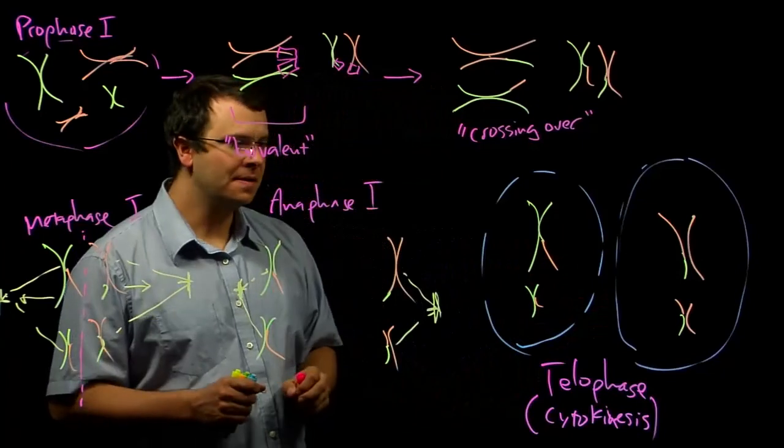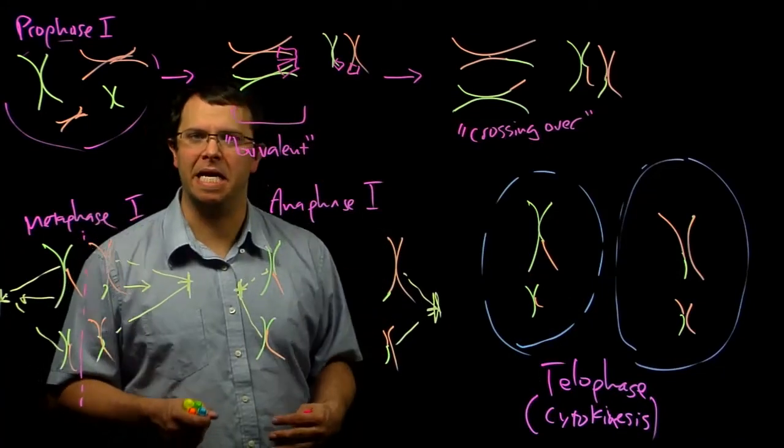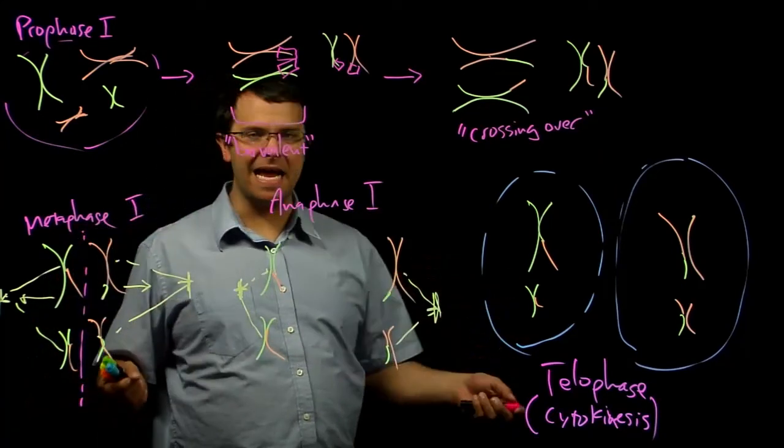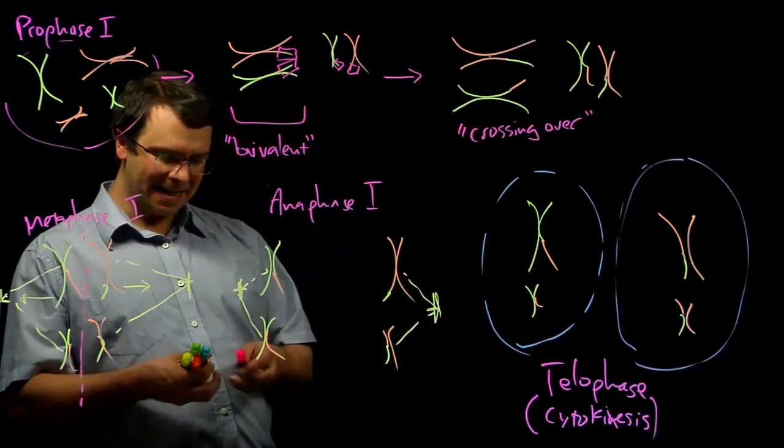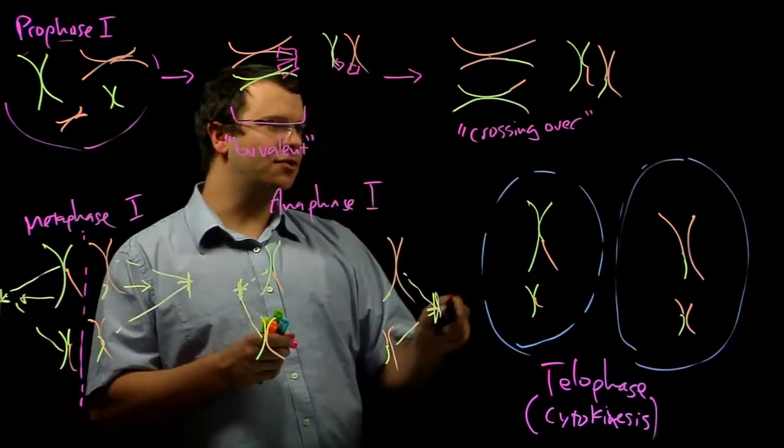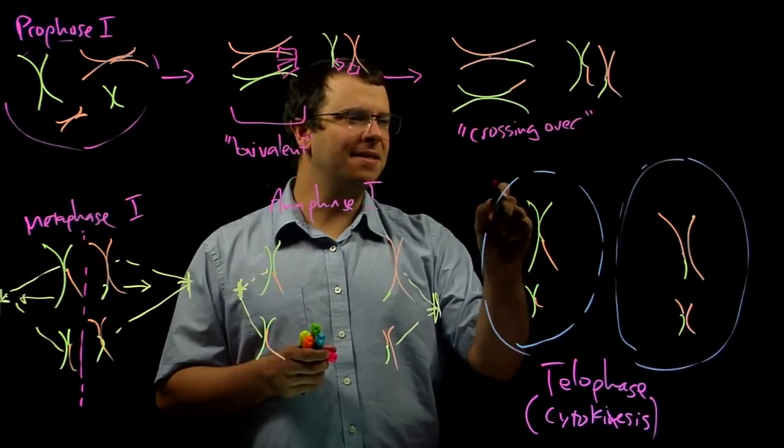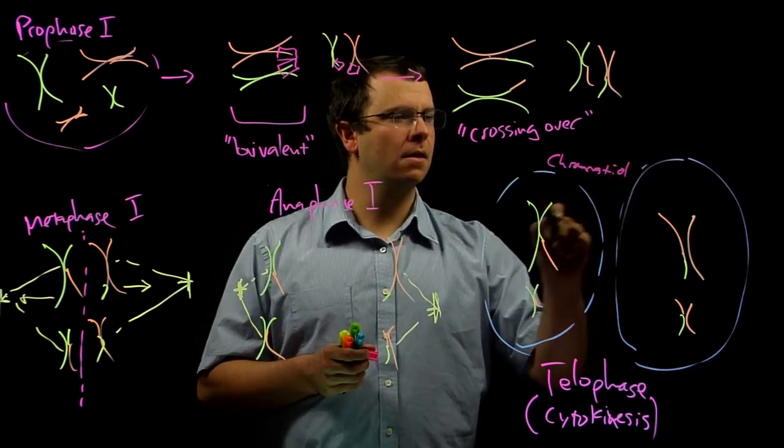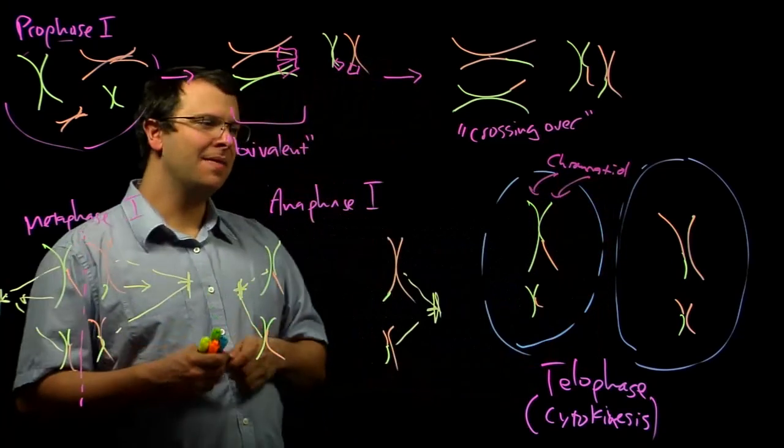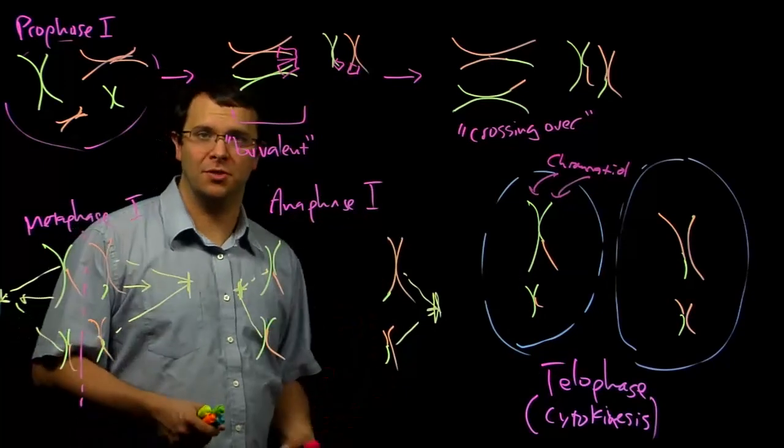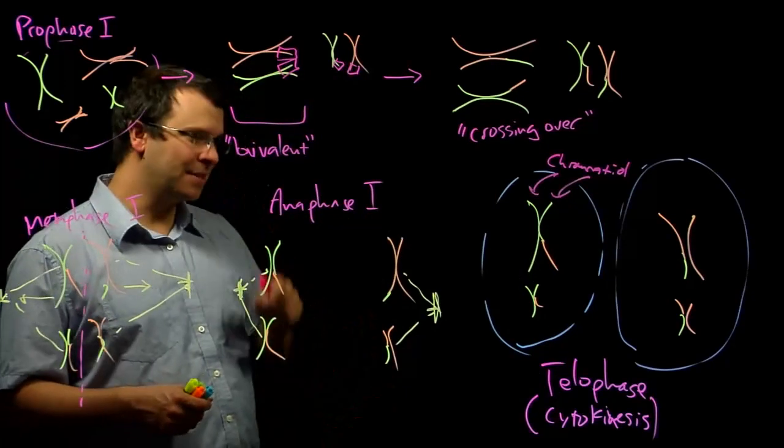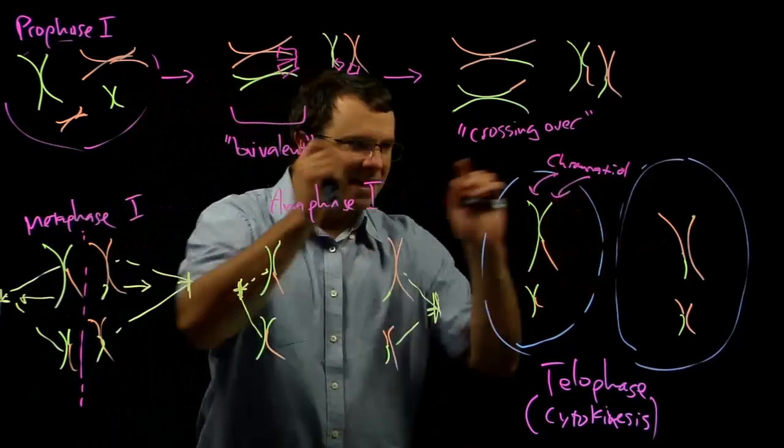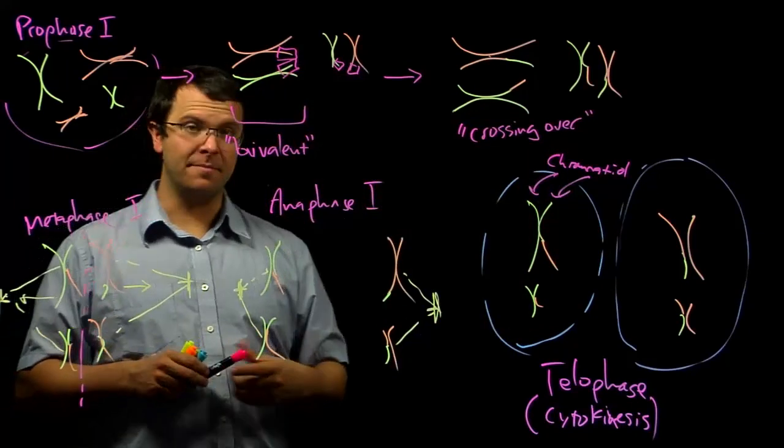However, this is still post copying. So remember that in S phase of the cell cycle, the DNA gets replicated. And so each of these two kind of progenitor cells still has two chromatids. Remember that a chromatid is one arm of a chromosome. And so in the second half of meiosis, then these chromatids are going to split apart. And of course, that'll be our next topic.